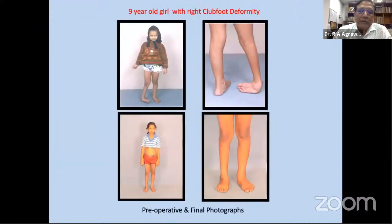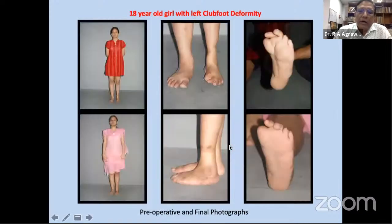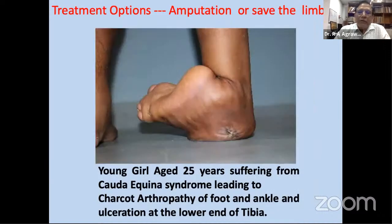Additional cases: a 9-year-old girl with right clubfoot deformity corrected by Ponseti-based principles, and a 12-year-old who had undergone multiple previous surgeries — deformity was corrected. An 18-year-old girl with left clubfoot deformity — also corrected.